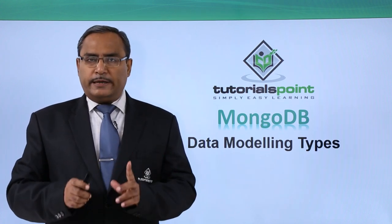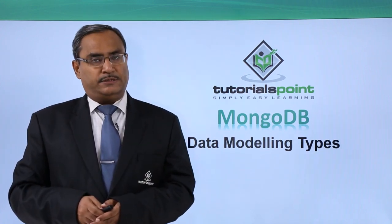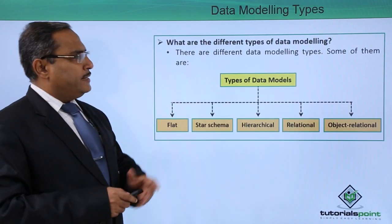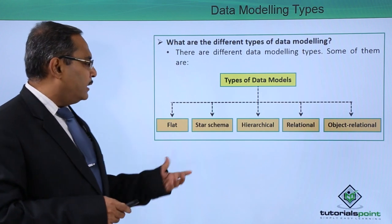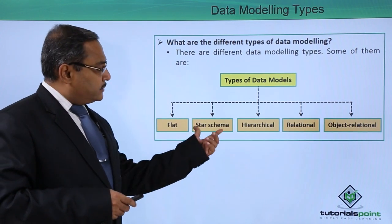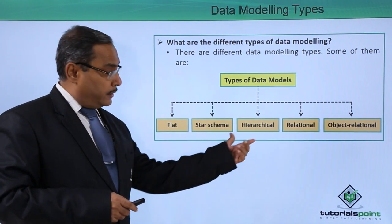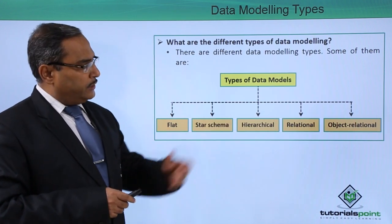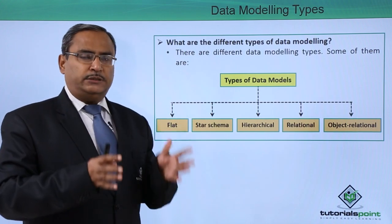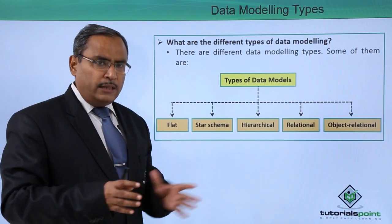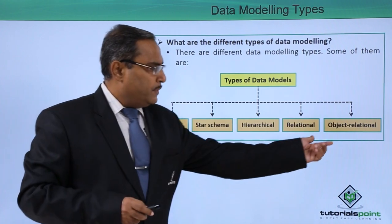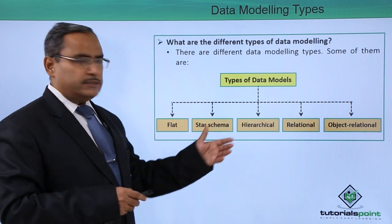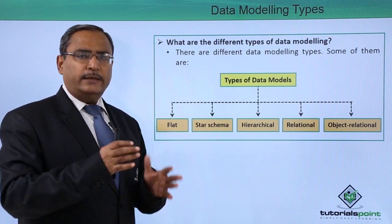In this video, we are discussing different data modeling types. There are different data modeling types available, and some of them are flat, star schema, hierarchical, relational, and object relational. Object relational means the object oriented data model and relational data model will get combined together, and that is known as the object relational model. Let us discuss each one of them one by one and their comparative study.